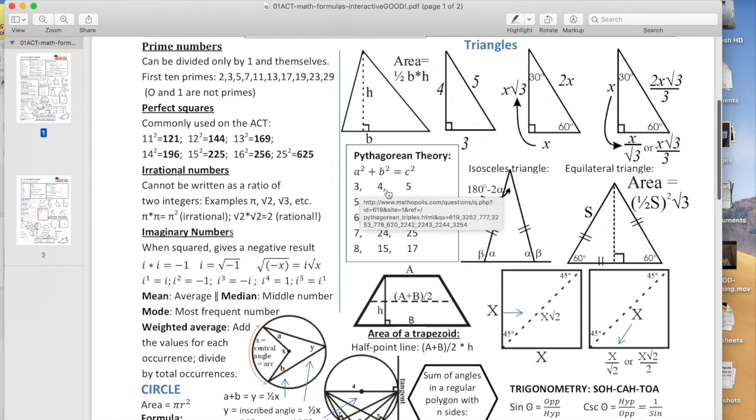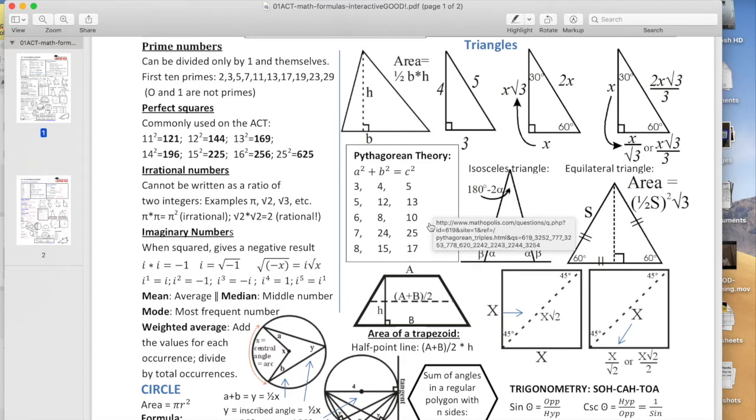Pythagorean theorem, there are some Pythagorean triples you should know. Of course, the 3, 4, 5, and the 6, 8, 10 is a multiple of 3, 4, 5. But the 5, 12, 13 is very common, and a little bit less common, 7, 24, 25, 8, 15, 17. There are a few important Pythagorean triples, and here are most of them.